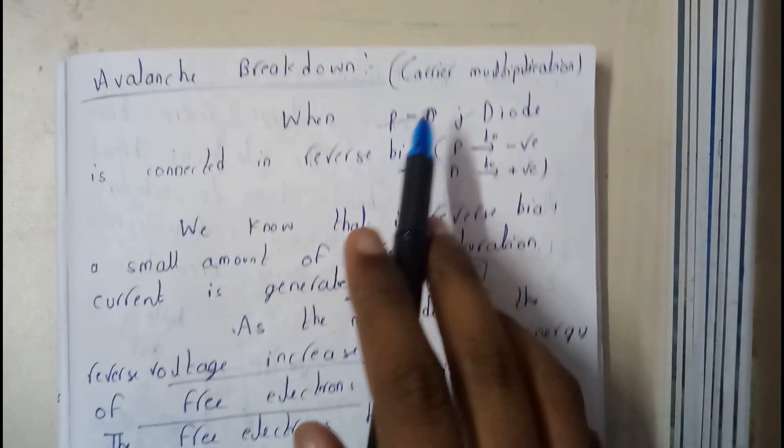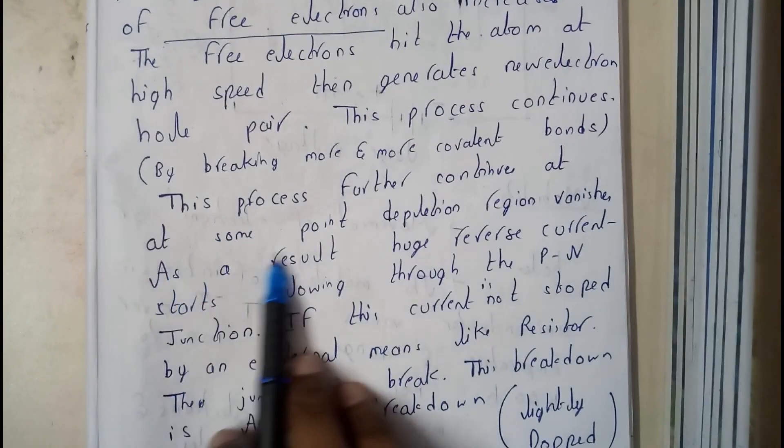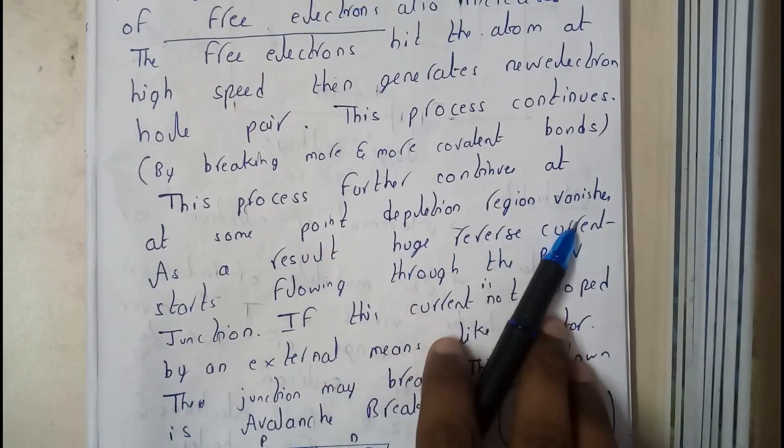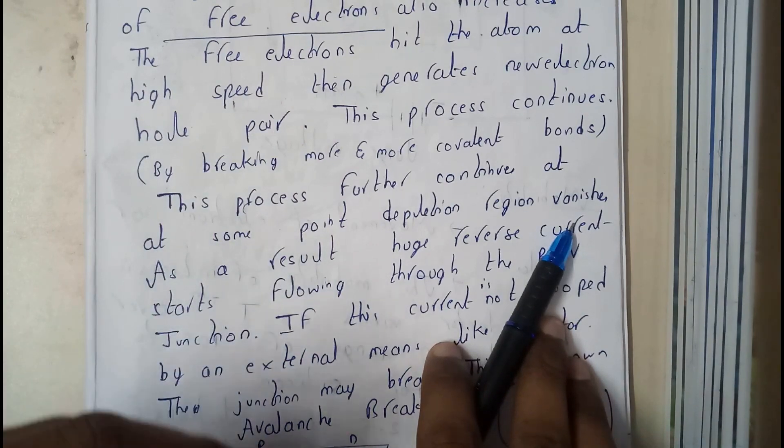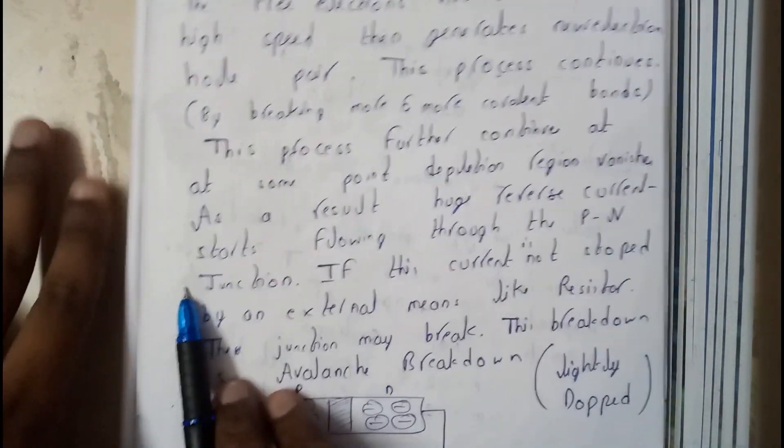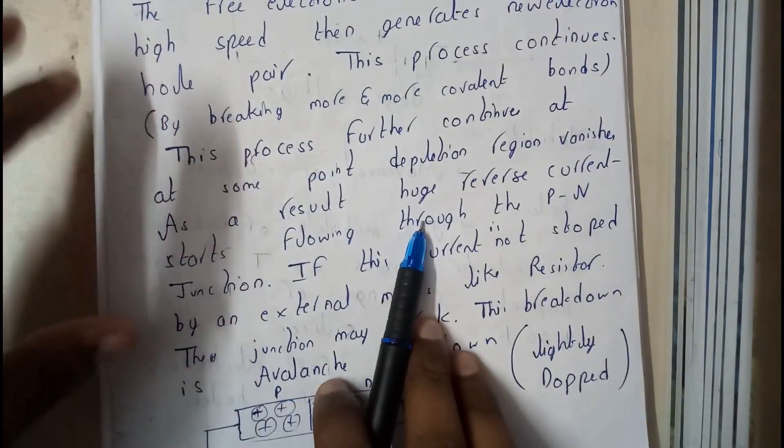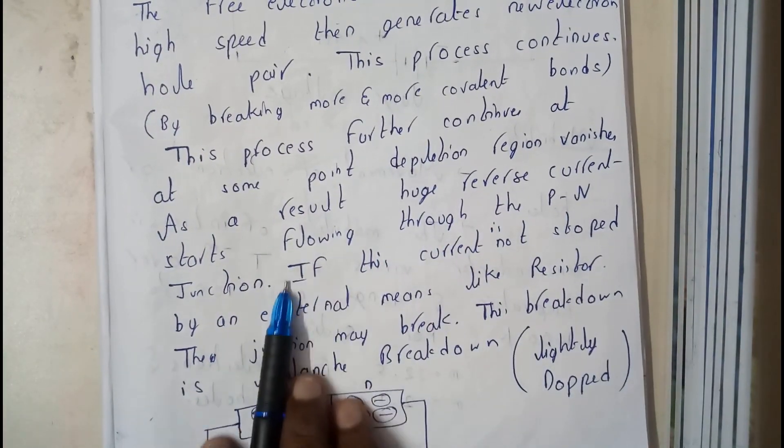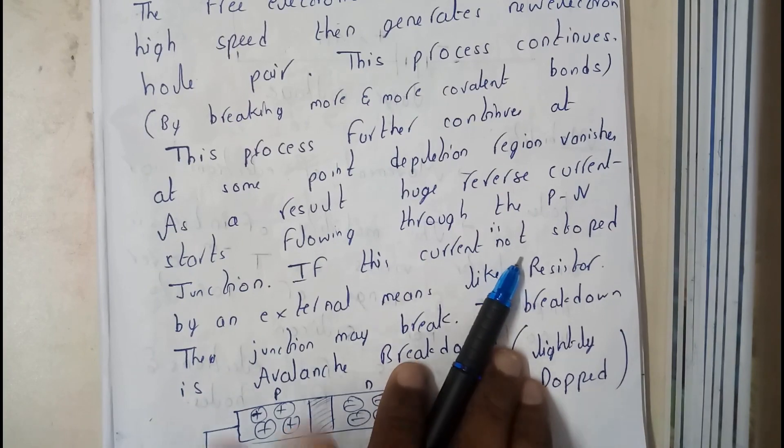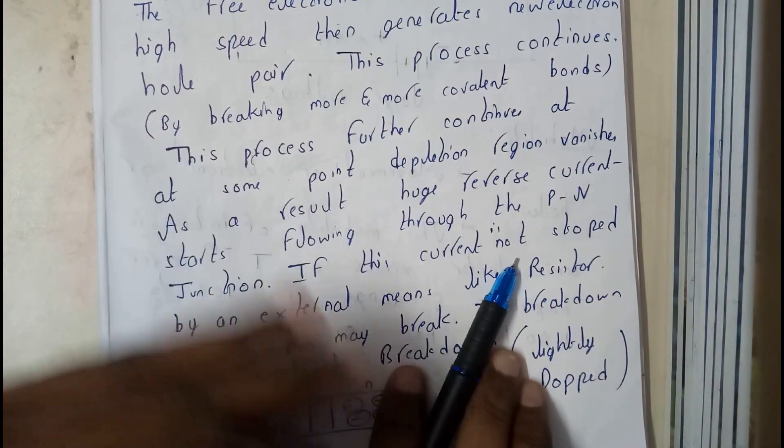Here it's happening like a multiplying process, right? That's the reason why the name carrier multiplier came. Now the process further continues. At some point, the depletion region vanishes. As a result, a huge amount of reverse current starts flowing through the PN diode. If the current is not stopped, the diode is going to get damaged and it may even burn off.